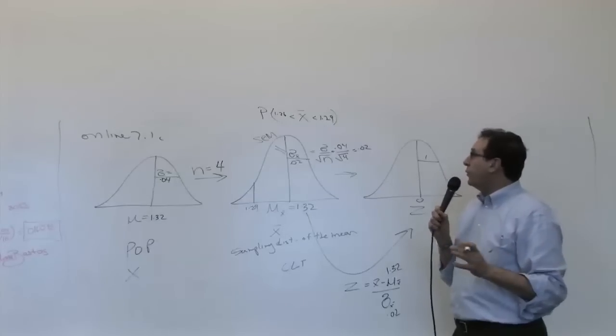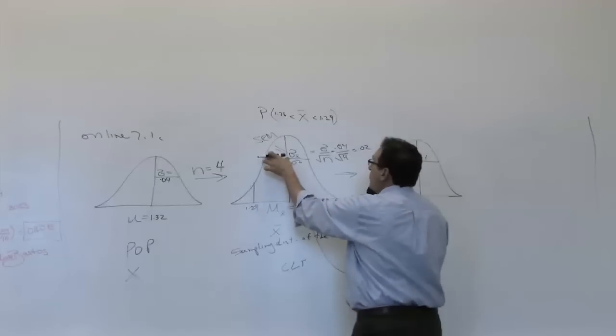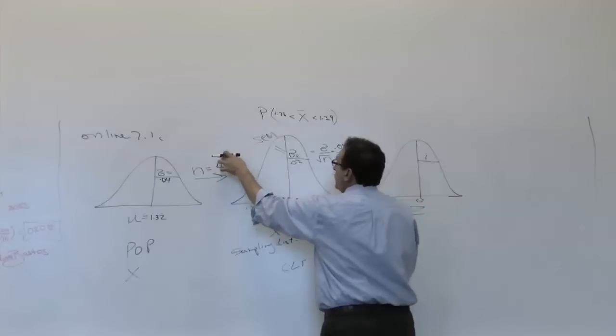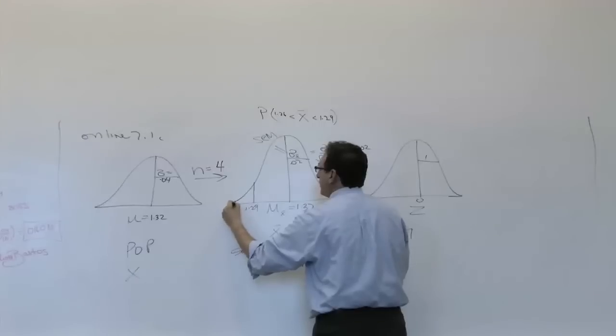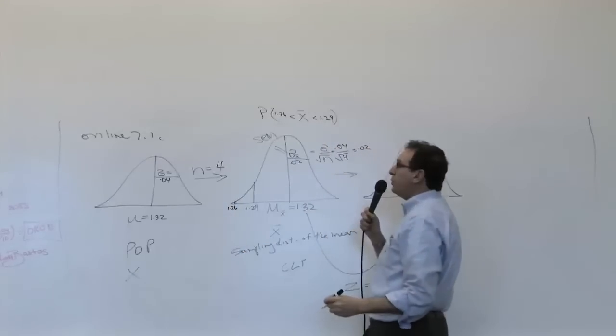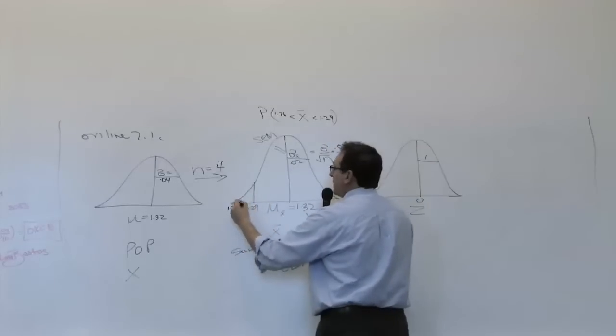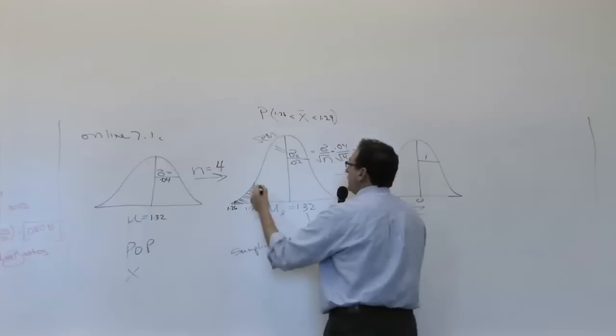And where is 1.26? Well, let's see, 1.30, 1.28, 1.26, so you've got three of these across. So 1.26 is somewhere around here. And we want everything in between those two numbers, so the piece that we're looking for is this piece over here.